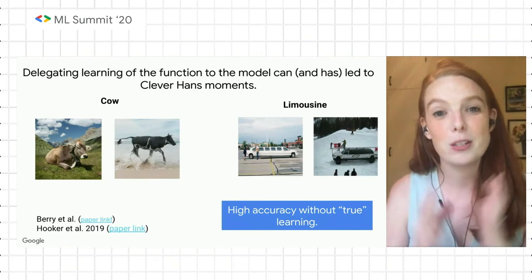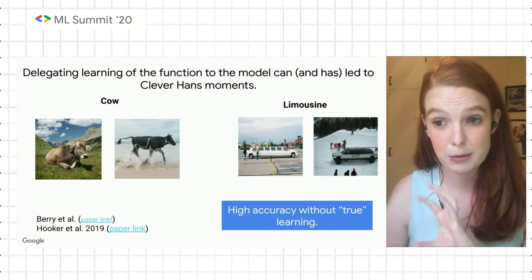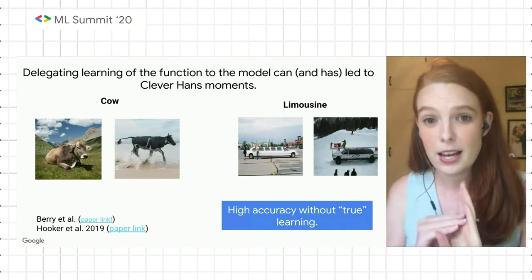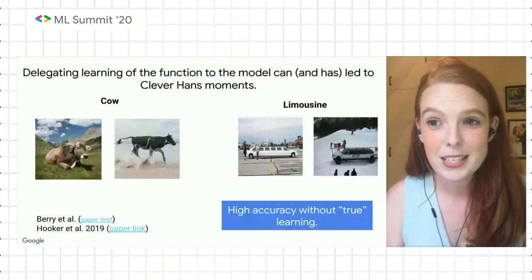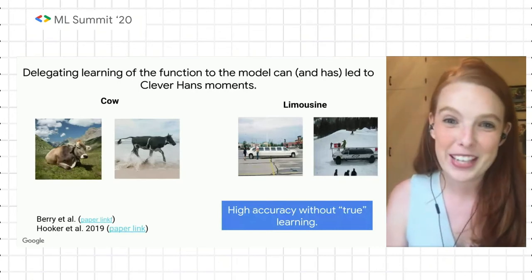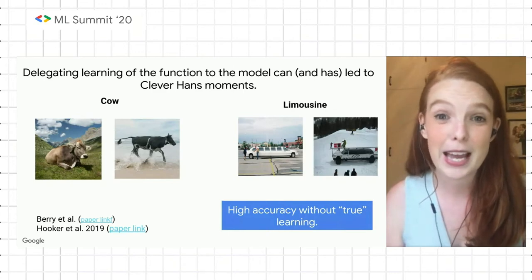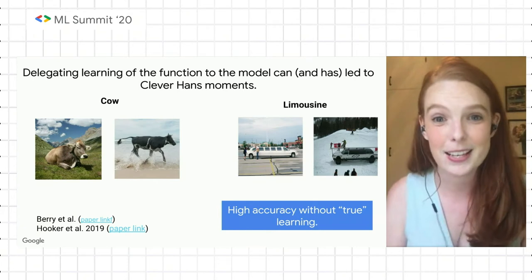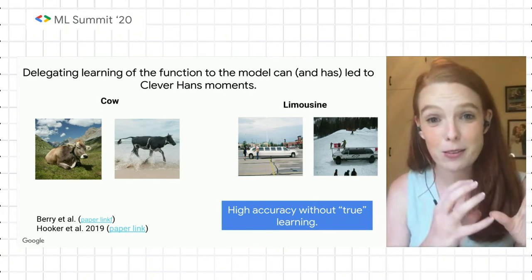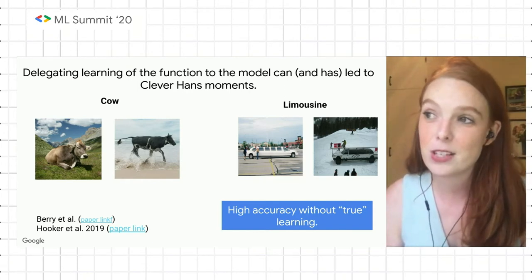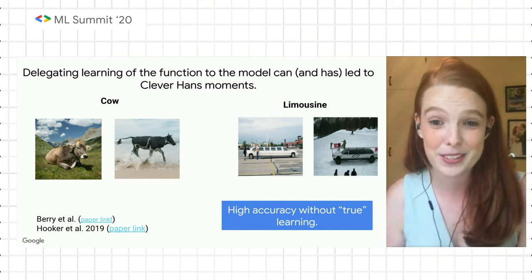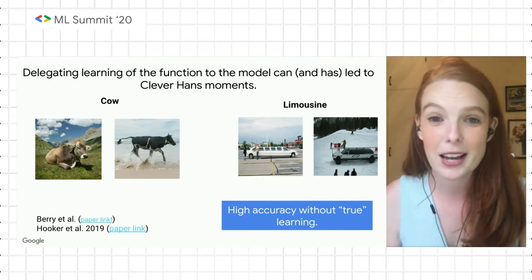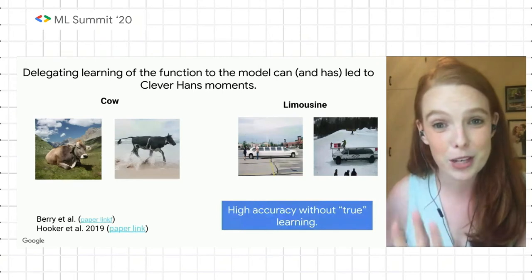We see this within our deep neural network domains as well. In front of you are two images — one is a cow, the other is a limousine. For the cow, the one the model predicts incorrectly is the cow on the beach, because this vantage point is very underrepresented in our training sets. So the model tends to struggle with instances of an object transposed into an unknown setting. This also shows the reliance of deep neural networks on background features — it learns that cows are associated with alpine, picturesque green backgrounds. For the limo, the model predicts incorrectly a picture of a limo on ice, and correctly predicts the limo in an urban environment because it's learned to associate the environments themselves with these labels.